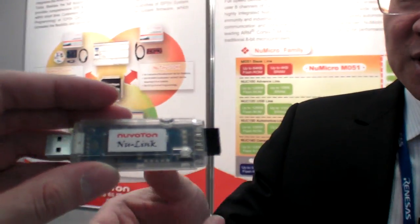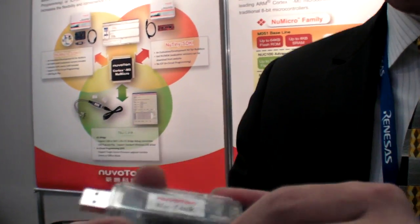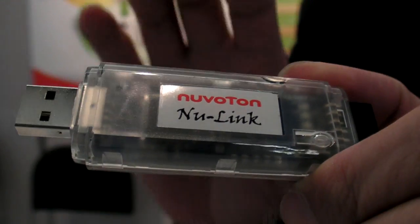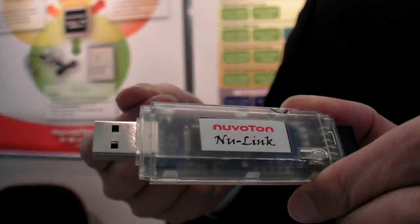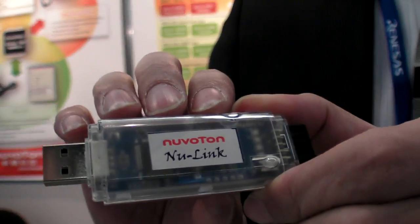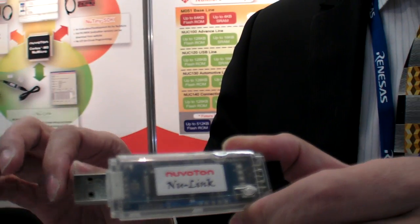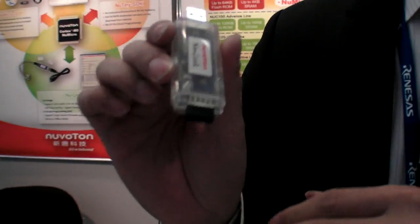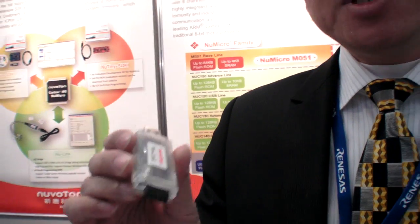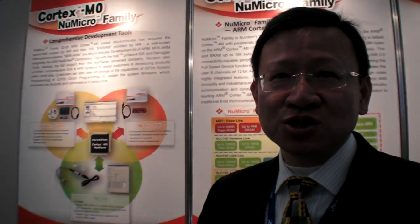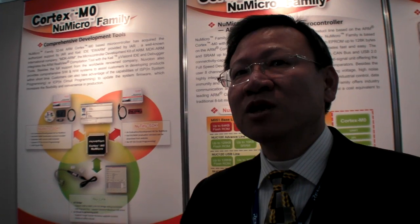You also have this — what is this? This is a cool thing. This is a NuLink. This kind of product is for debug. You can use this to debug the microcontroller — you can single step and debug everything. Another cool thing is this is not just a debug system, it can also be a programmer. That means you can put your source code in and program to the target system.